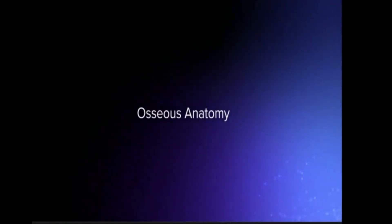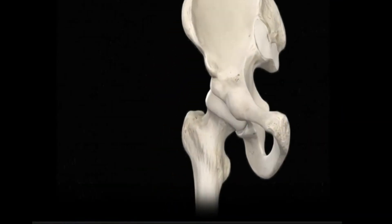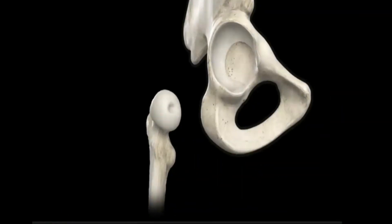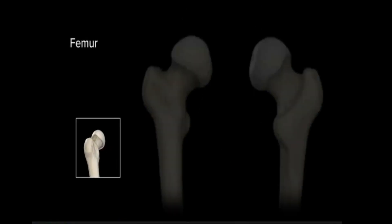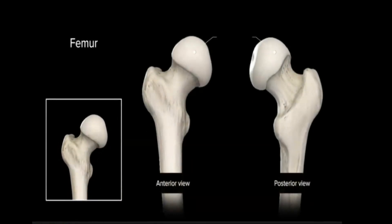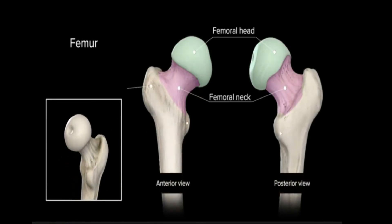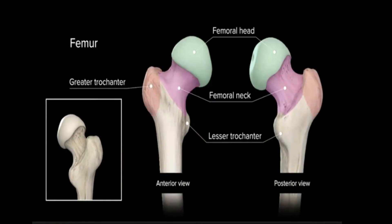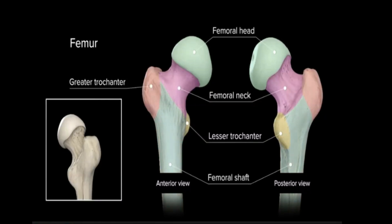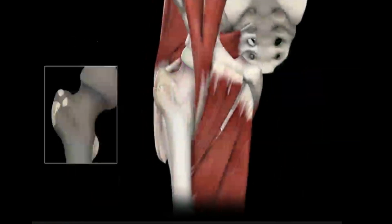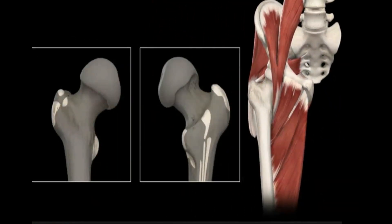Transitioning now to the deeper osseous anatomy, the ball and socket configuration of the hip allows a wide range of motion and is described as an articulation between the head of the femur and the acetabulum of the pelvis. At the hip articulation, the femur begins as a femoral head and tapers down into a femoral neck before widening at the point of the greater and lesser trochanters, then narrows once more into the shaft of the femur. The greater and lesser trochanters are bony prominences that serve as insertion points for tendons about the hip.